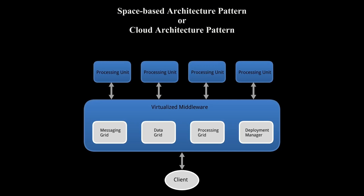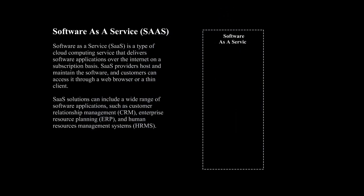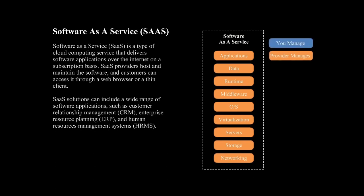There are three main types of cloud computing services. First, Software-as-a-Service is a type of cloud computing service that delivers software applications over the internet on a subscription basis. Software-as-a-Service providers host and maintain the software, and customers can use a web browser or a thin client to access it. Solutions can include customer relationship management, enterprise resource planning, and human resources management systems. It is popular because customers don't have to install and maintain the software on their own servers and can use it from anywhere with an internet connection.